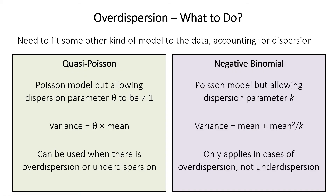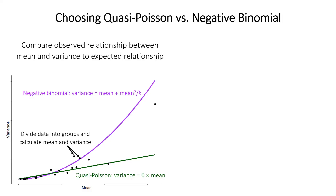The negative binomial only works for over dispersed data — you can't use it for under dispersed data. So when you have over dispersed data, how do you choose between these two methods? It's somewhat a judgment call, but here are a couple of tools you can use.